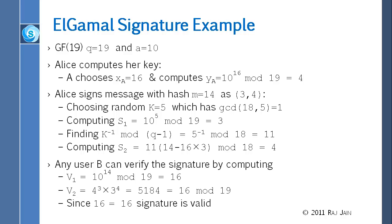And then you find k inverse, is 5 inverse mod 18. Now again, you have to remember how to find the inverse. For these small numbers, you can do by inspection, but generally, you need what? Table. Yeah. That table we talked about. So you can find that, you will find 11. So then you can compute S2 by k inverse times m minus S1 times XA. XA was 16. So S2 is 4, S1 is 3, and you send 3 comma 4 as the signature.